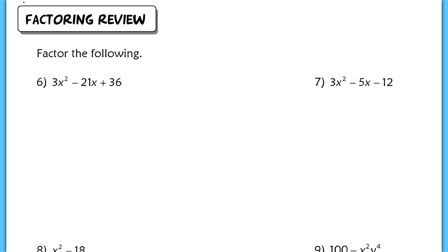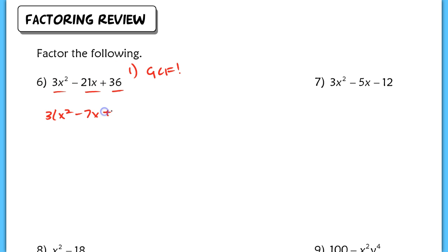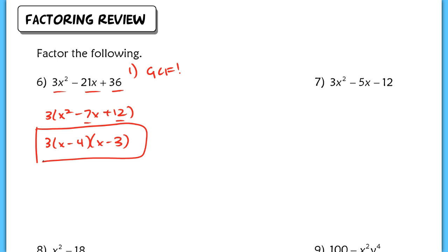The next section is a factoring review. You can pause and try the problems on your own — if you get them correct by checking the key, stop the video and you're good. If not, let's continue. Here we have a trinomial, and the first thing to recognize is a GCF. Always look for a GCF first — that should be your number one goal. We have a 3 we can factor out, giving us 3 times (x squared minus 7x plus 12). Now find two numbers that multiply to 12 and add to negative 7: that gives x minus 4 and x minus 3. So the answer is 3(x minus 4)(x minus 3).